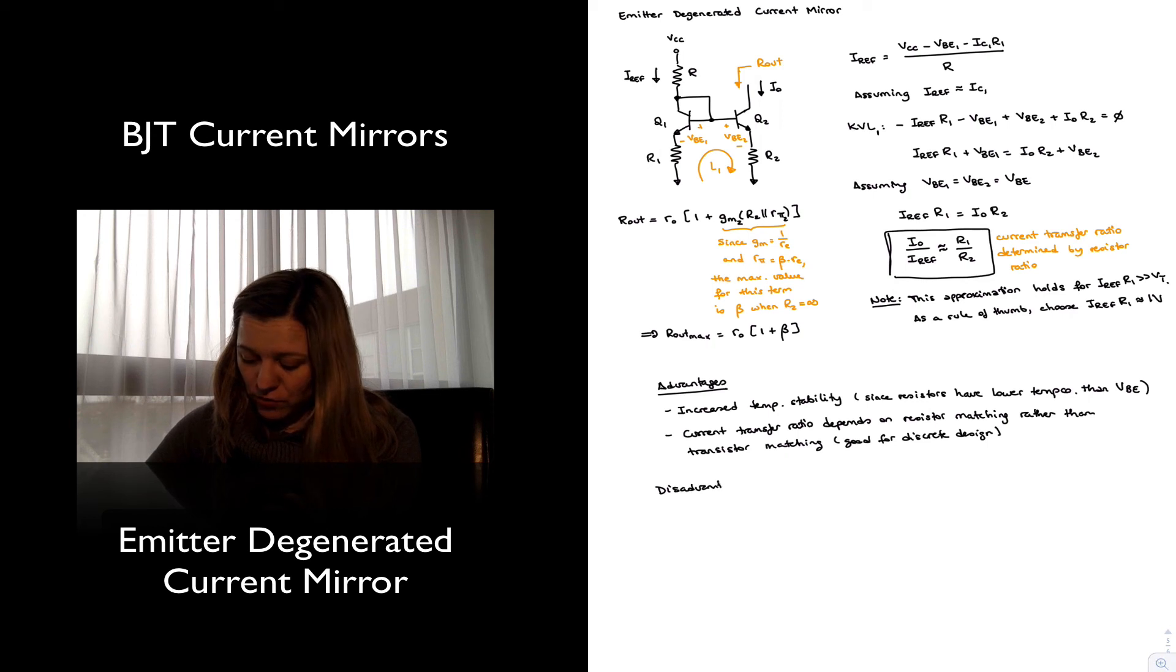Disadvantages or trade-offs will be more components, so more complexity in the circuit. Those components are resistors, and those resistors can become fairly large, and so again, this is not necessarily always a disadvantage, but it is a disadvantage for IC design. For IC design.